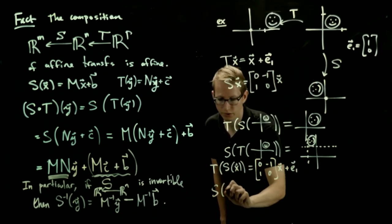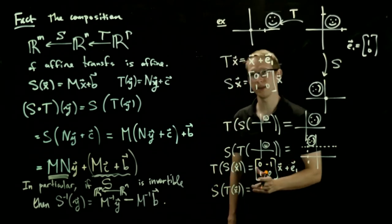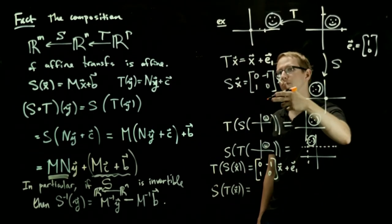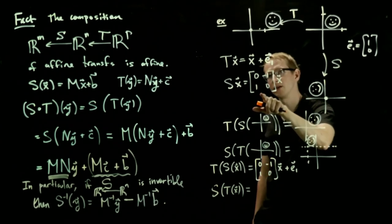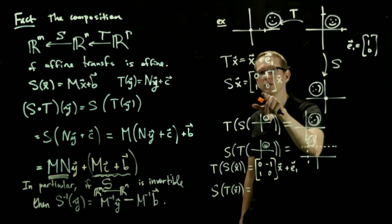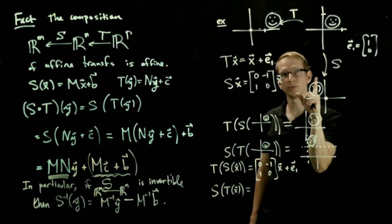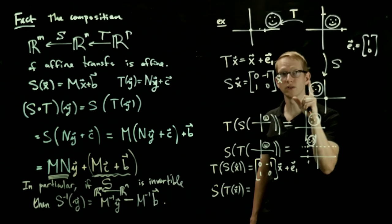If we did it in the other order, well, in that case, first we translate, and then we rotate. And when we rotate, we not only apply the rotation to our initial vector X, but we also apply the rotation to the vector E1. And E1 gets rotated by a 90 degree rotation to the vector E2.